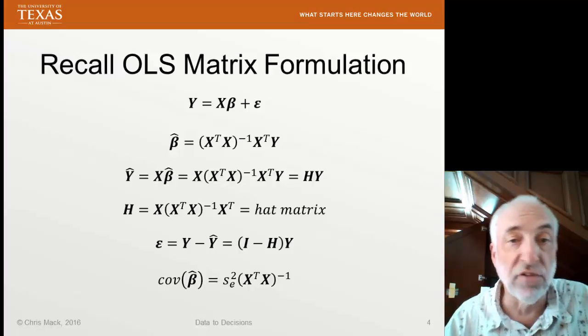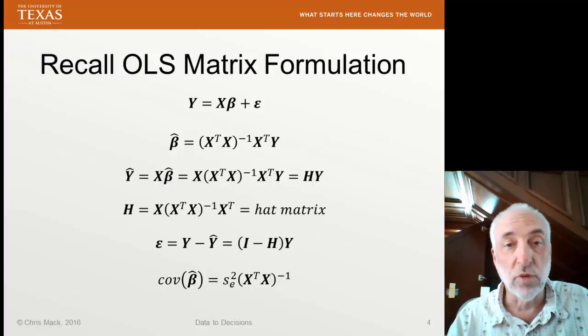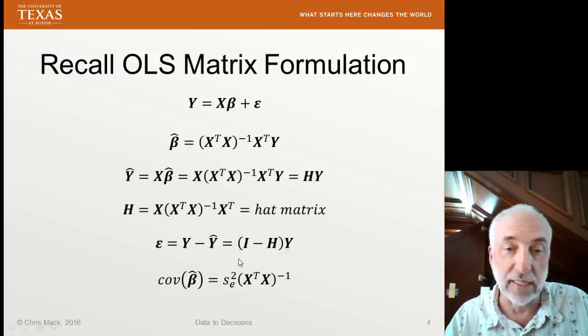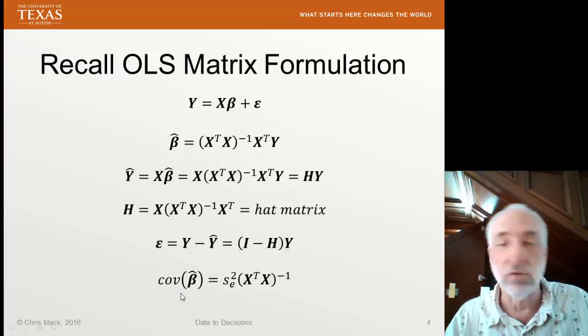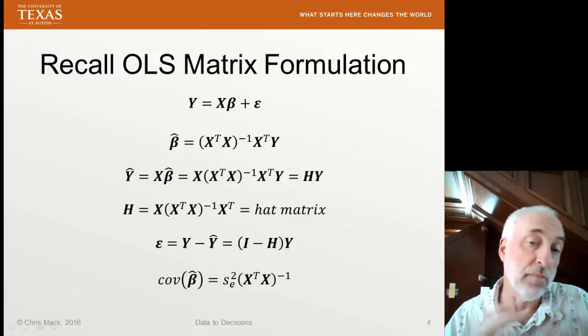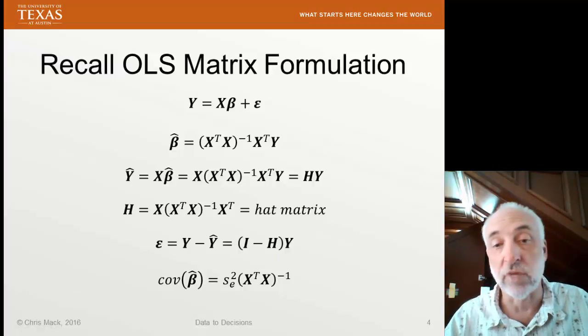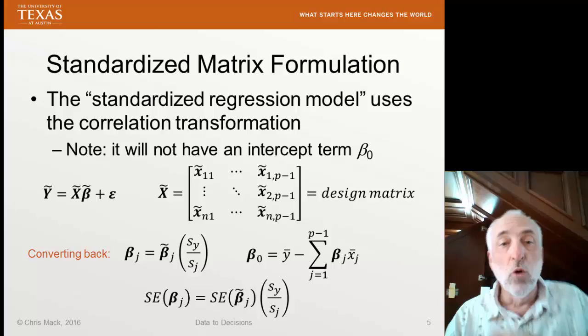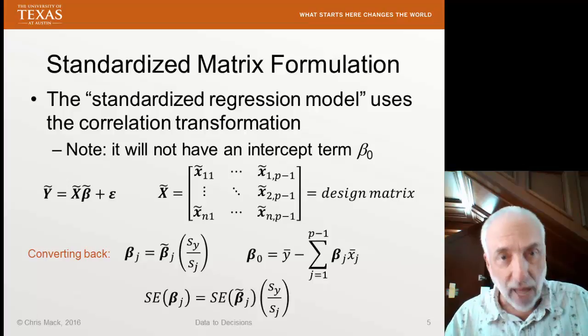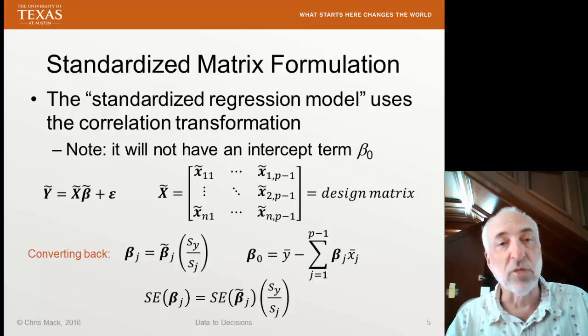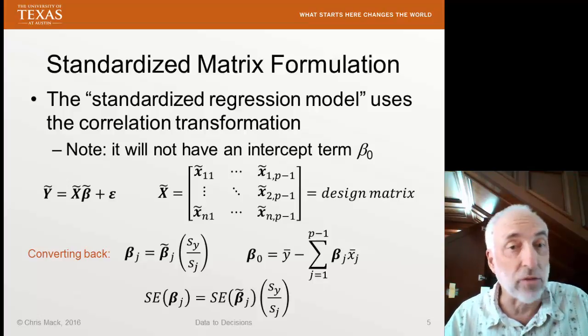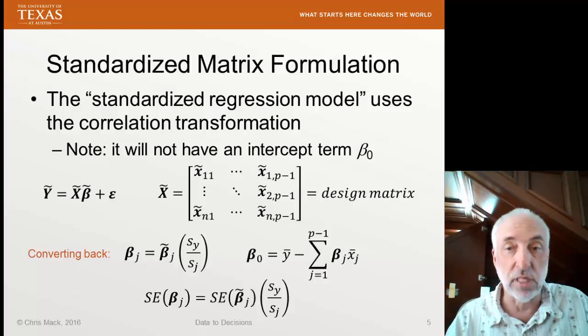From that we can solve for the best fit coefficients and predicted values. We have something called the hat matrix. We calculate the residuals. Our covariance matrix gives us the uncertainties, the standard errors of our coefficients and their correlations. When we standardize our variables before we do our regression, it leads to some nice things about these matrix representations.